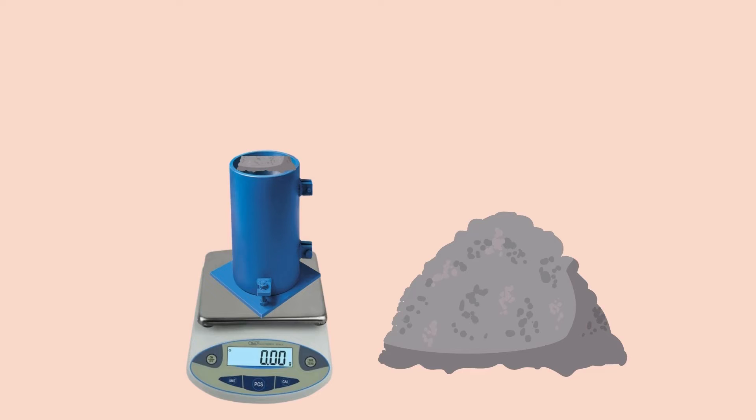Weigh the cylinder when filled with fully rammed concrete. This will be weight during full compaction W2. At the end or at the start of procedure, make sure to measure the weight of empty cylinder as well. This will be W.